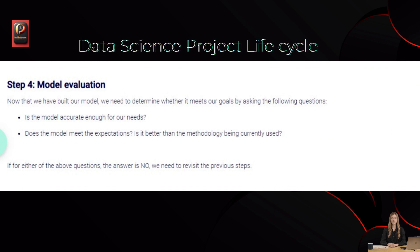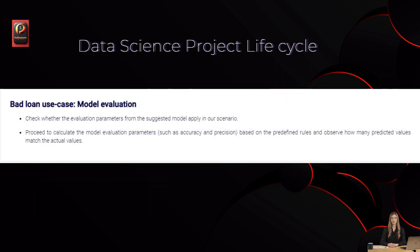Step 4: Model Evaluation. Now that we have built our model, we need to determine whether it meets our goals by asking: Is the model accurate enough for our needs? Does the model meet the expectations? Is it better than the methodology being currently used? If the answer to any of the above questions is no, we need to revisit the previous steps. Bad loan use case — Model Evaluation: Check whether the evaluation parameters from the suggested model apply in our scenario. Calculate model evaluation parameters such as accuracy and precision based on predefined rules, and observe how many predicted values match the actual values.